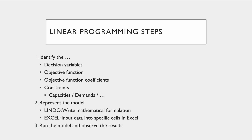First we identify all the variables, then we look at any coefficients — for example, producing one item of this means you can only produce half an item of another. Constraints include capacities and inventory of parts. We then represent the model by writing out the mathematical formula in Excel, which makes it a little easier. We'll combine the model setup in both Lindo and Excel together since it's just easier to do it straight into Excel. Then we run the model and see what happens.